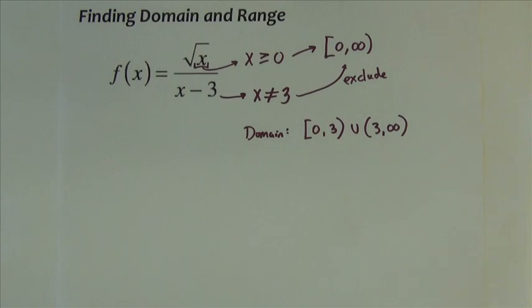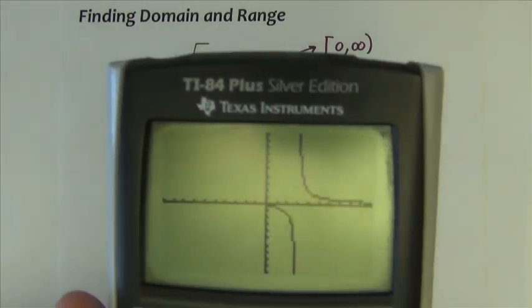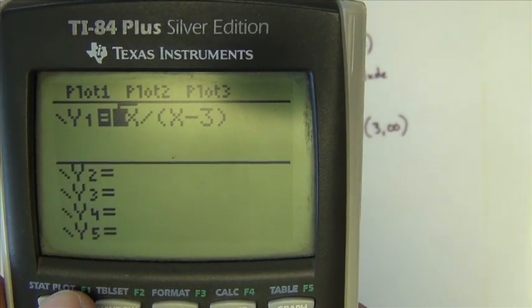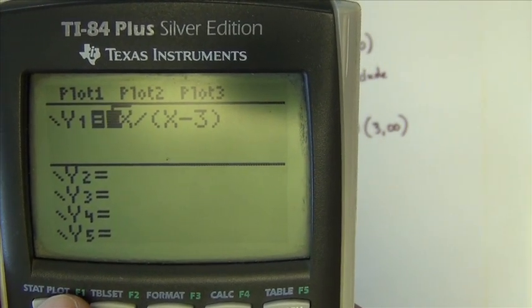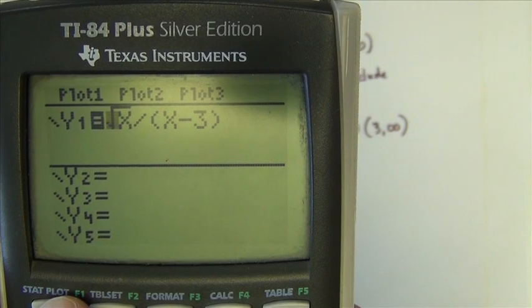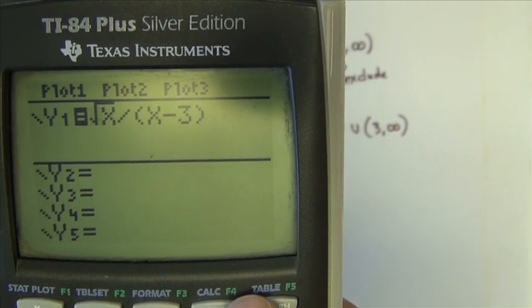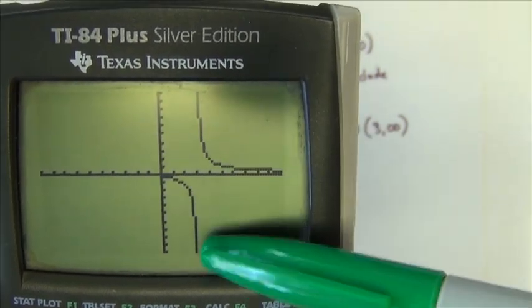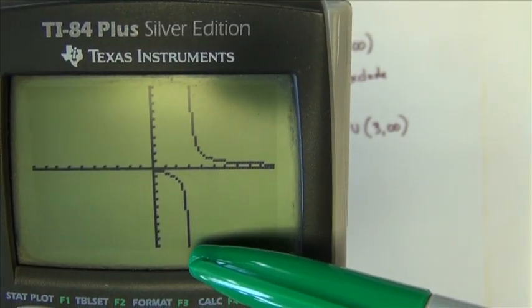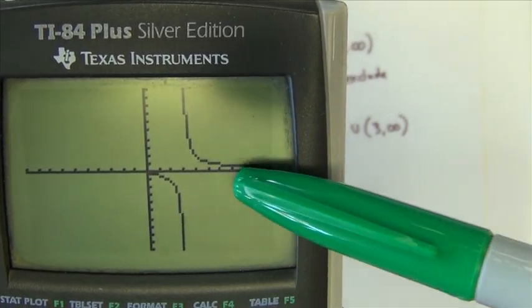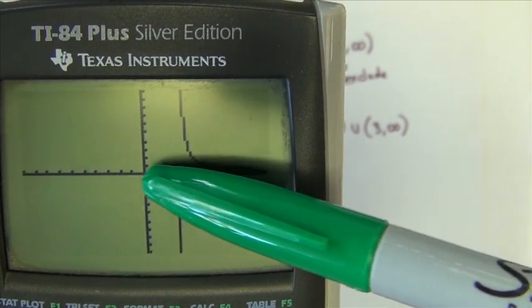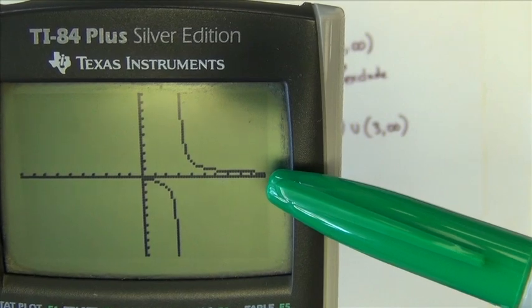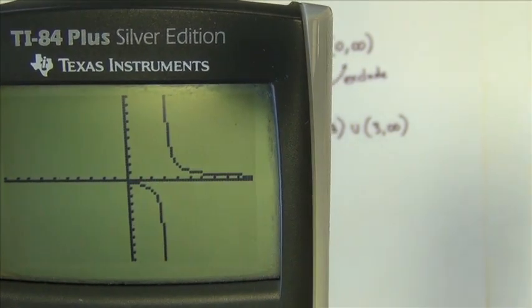Next, what we'd like to do is find the range. And for the range, we're going to again look at a graph. I went ahead and typed in the function. Notice there's parentheses behind the divide symbol so that the x and the minus three are in the denominator. And when I look at this, I'm looking vertically for the range. It appears that there is a y value right in the middle of these two curves that is excluded from the range. And it should be pretty apparent that that y value we're excluding is zero.